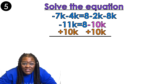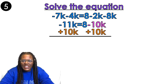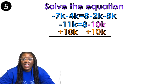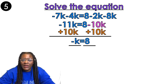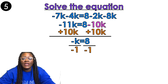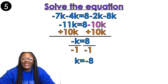I can't leave my answer as negative 1k equals 8 — the k is not truly by itself because it has a negative in front of it, which is the same as negative 1. So I divide by negative 1 on both sides, and k equals 8 divided by negative 1, which is negative 8. That's my final answer.